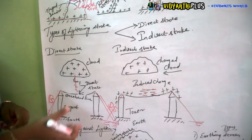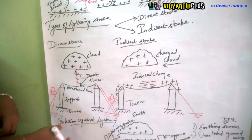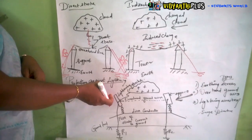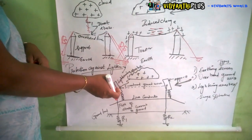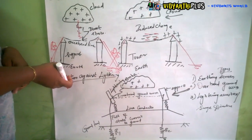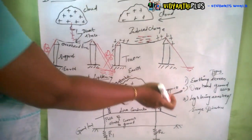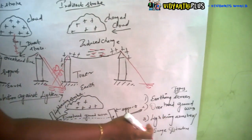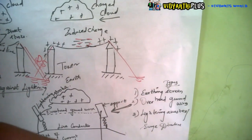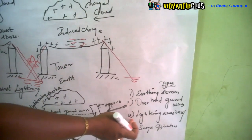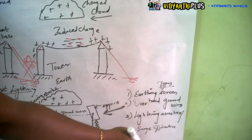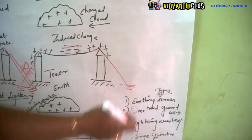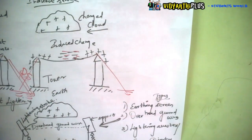Our main aim is to protect the transmission line and connected components from lightning strokes. There are four protective methods: earthing screen, overhead ground wires, lightning arrestor (also called surge diverter), and a fourth measure.